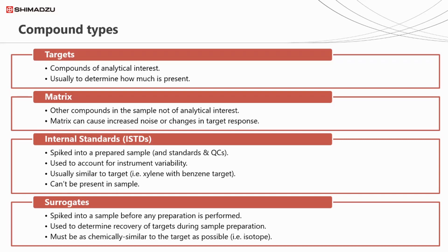For GC, it's almost impossible to differentiate between targets and their isotopically labelled equivalents, as we require retention time separation.